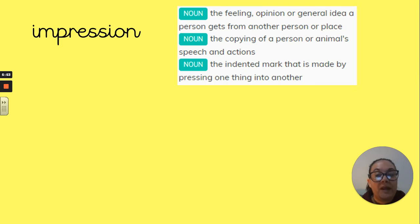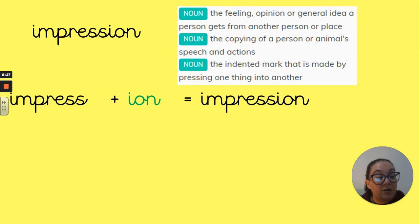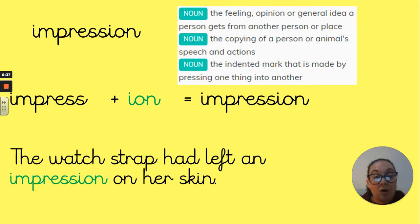Next word: 'impression'. Three explanations: the feeling, opinion or general idea a person gets from another person or place; the copying of a person or animal's speech or actions; and the indented mark made by pressing one thing into another — that takes me back to our work on rocks, Year 4, working with plasticine and how we left indentations in it. Our root word is 'impress'. Because it already has that 's-s' ending, we add our 'i-o-n' to give the word 'impression'. In a sentence: 'The watch strap had left an impression on her skin.'